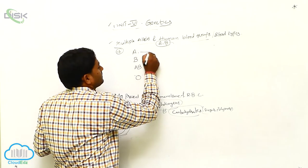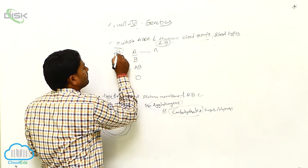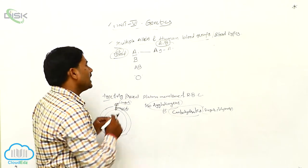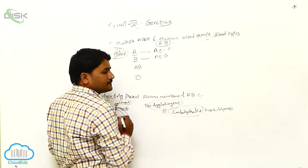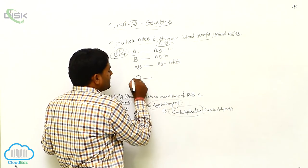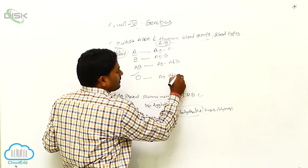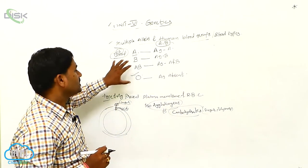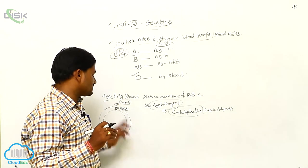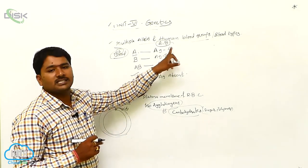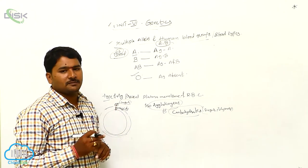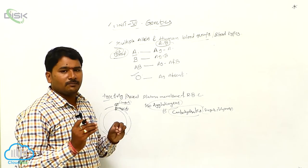In the A blood group, antigen A is present. In the B blood group, antigen B is present. In the AB blood group, both antigen A and antigen B are present. Whereas in the O blood group, antigens are completely absent.